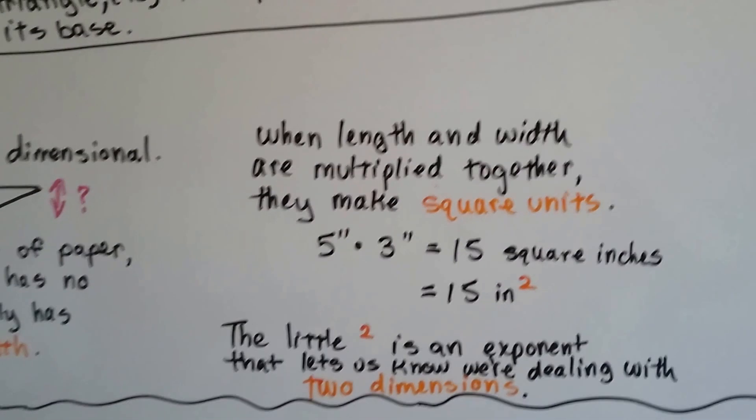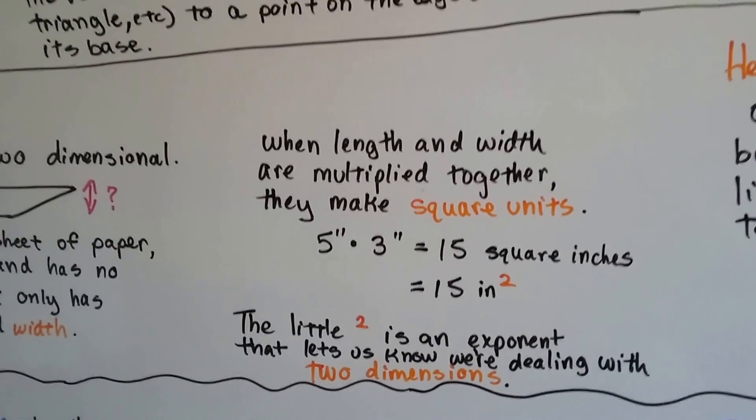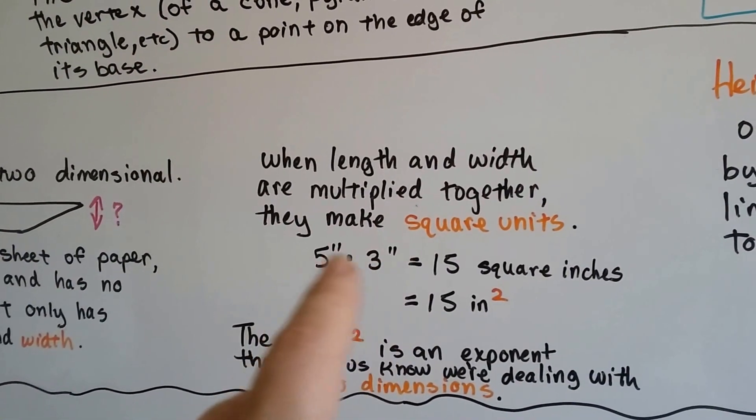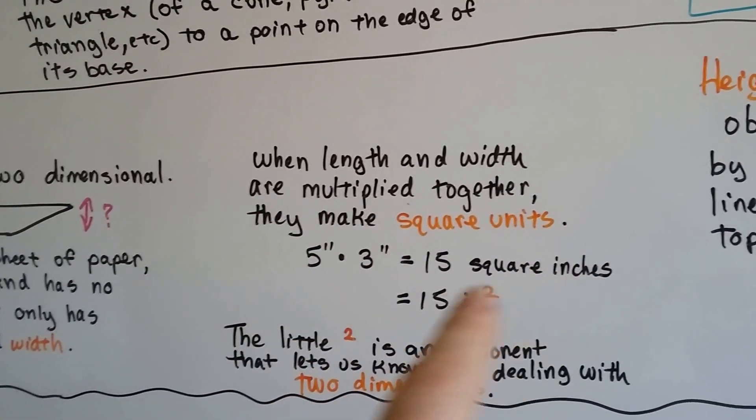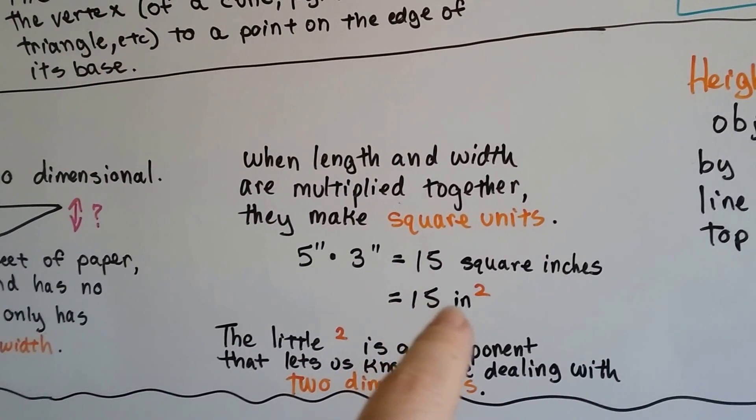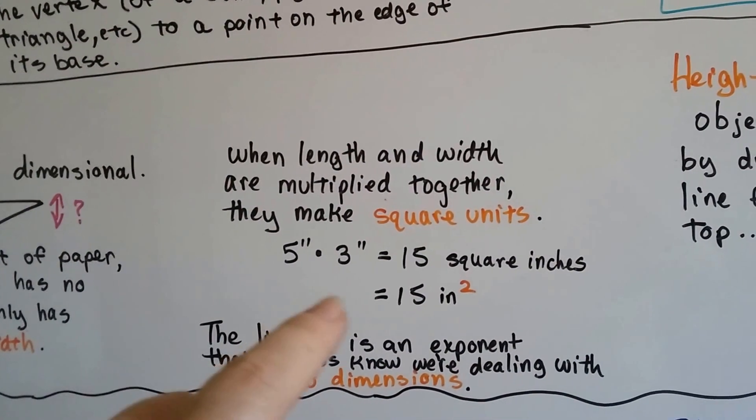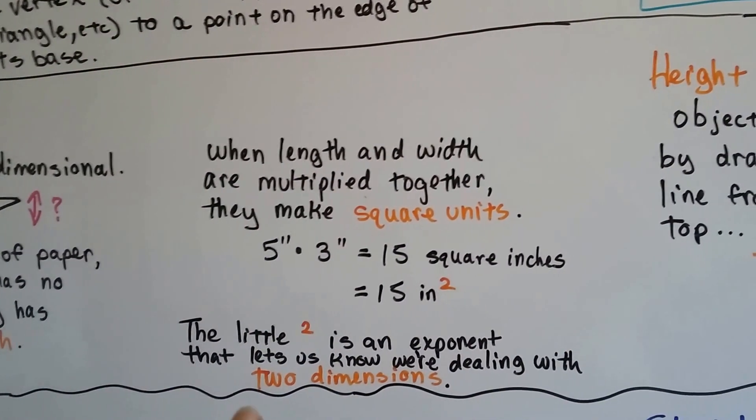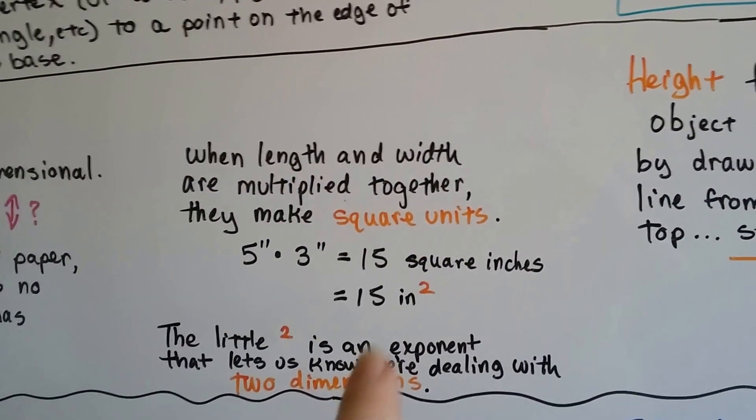When length and width are multiplied together, they make square units. 5 times 3, 5 inches times 3 inches is 15 square inches. That would be 15 inches squared. And the little 2 is an exponent that lets us know we're dealing with two dimensions.